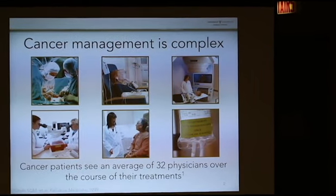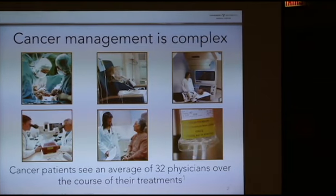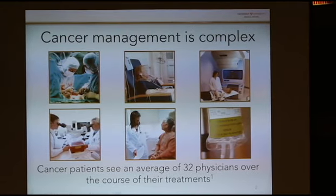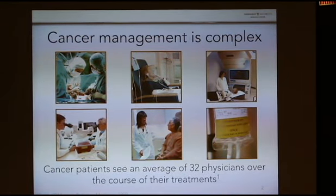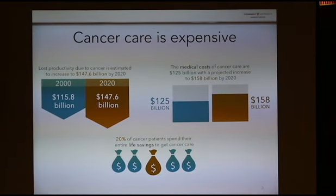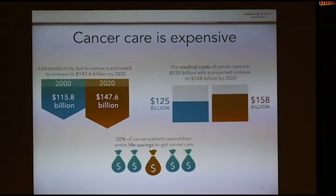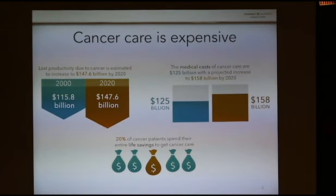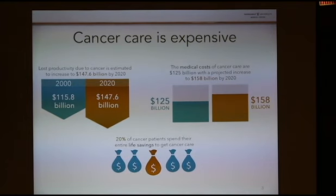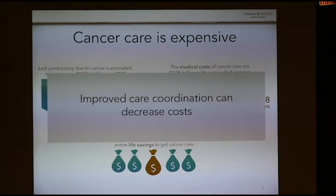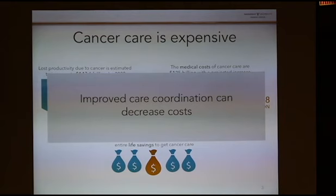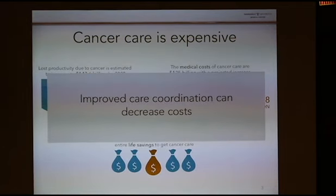A previous study found that cancer patients see an average of 32 physicians over the course of their treatments. With this many physicians, effective management of care is very integral to delivering high quality care. Cancer care is also very expensive — the medical cost is expected to be $158 billion by 2020, compounded by nearly $148 billion in lost productivity in that same period. Patients who receive care from a more highly connected group of physicians often have lower costs, due to reduction in unnecessary services and a more comprehensive approach to care.